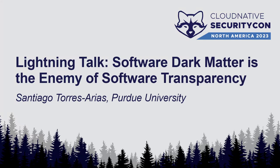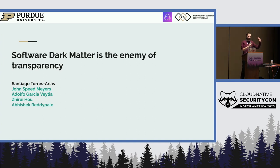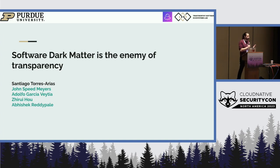I'm going to kickstart this five-minute trip journey, talking about software transparency, dark files, and essentially the challenge of communicating trustworthy software supply chain information in the current state of the art. This is work that I do in my lab at Purdue University, the Trustworthy Software Ecosystems Lab, but also with my colleagues at Chain Guard, John Spiegmeyers, and Adolfo.